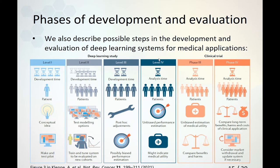Then there are level 3 and 4 studies, which both evaluate external cohorts. In level 3 studies, without a pre-specified primary analysis and with post-hoc adjustments, performance estimation may still be biased even in this cohort. While a level 4 study has both the external cohort and the pre-specified primary analysis of the external cohort, which may suggest that the system has utility in practice.